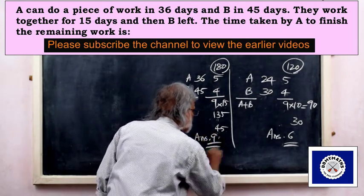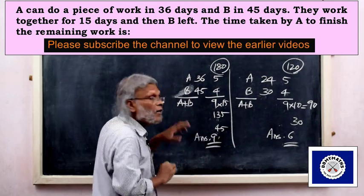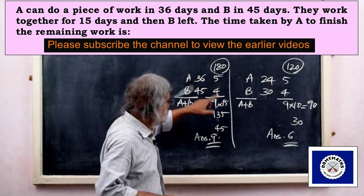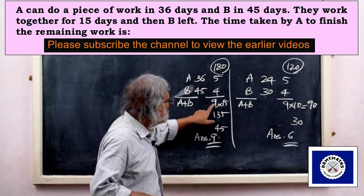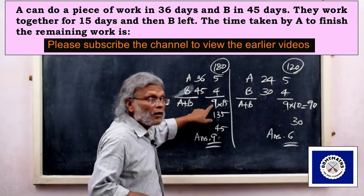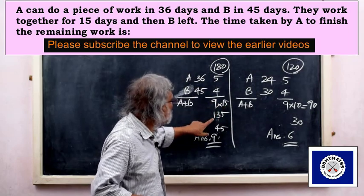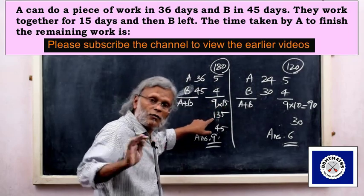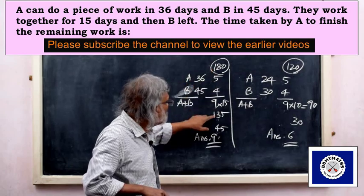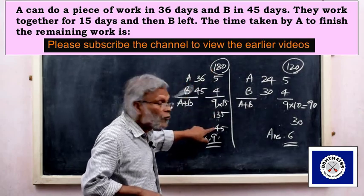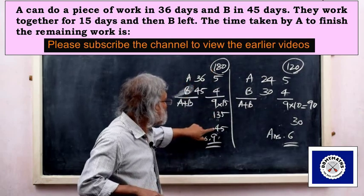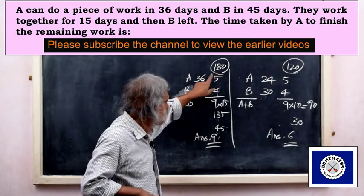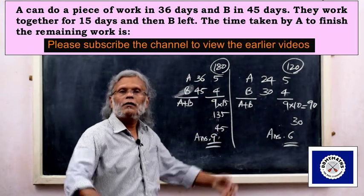Full work is 180. If A does 9 units per day for 15 days, that gives 135 units. Remaining is 45 units. B does 4 units per day, so 45 divided by 5 equals 9 days for B to finish.